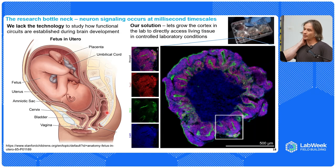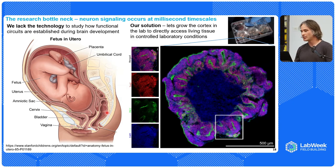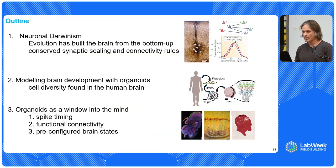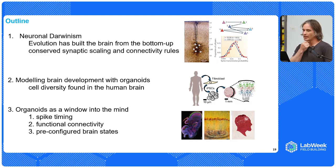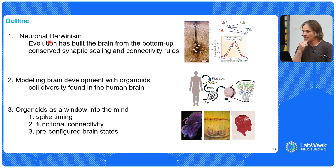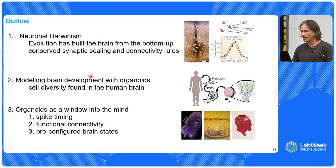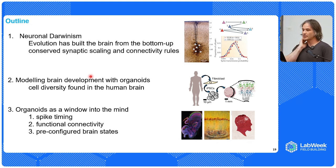Our solution in the lab is to grow the cortex in a lab to directly access tissue in controlled laboratory conditions. I'm going to talk about this interesting theory of neuronal Darwinism — essentially, evolution has built the brain from the bottom up. Then I'll move on to talk about modeling brain development with organoids, and touch on this idea of organoids as a window into the mind.